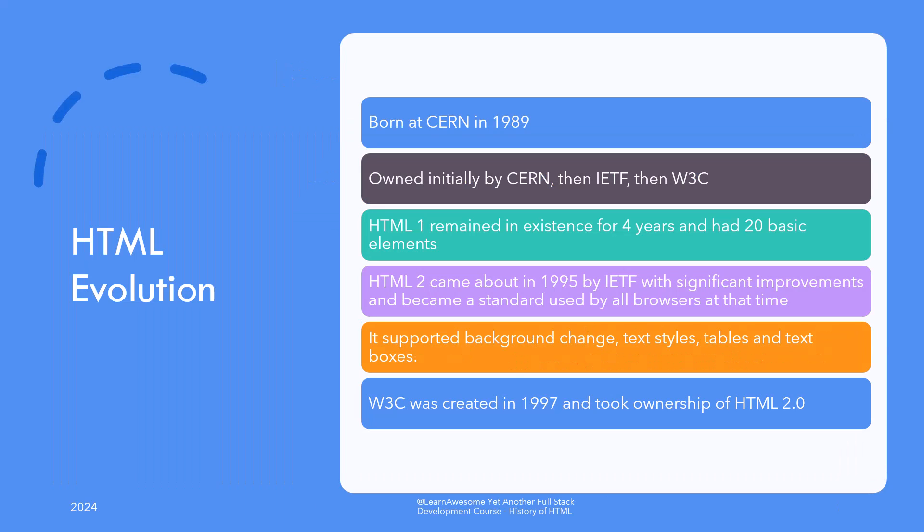So HTML came into being right alongside the World Wide Web in 1989 at CERN. In the next seven years, its ownership remained with CERN for a while before going to IETF, or Internet Engineering Task Force, another standard organization for the internet, and then to W3C, or World Wide Web Consortium, yet another standard organization.